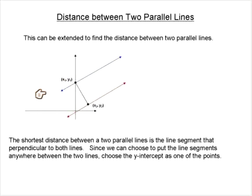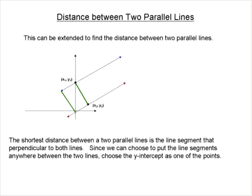If we have two parallel lines and we're trying to find the shortest distance, the shortest distance is the line that's perpendicular to both lines. I could put a perpendicular line at any point, but the easiest is a perpendicular line that goes through one of the intercepts and touches a point on the other line. It's all about those intercepts — the easiest coordinate to find is one of the intercepts.